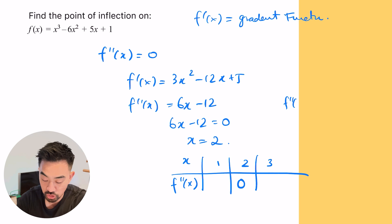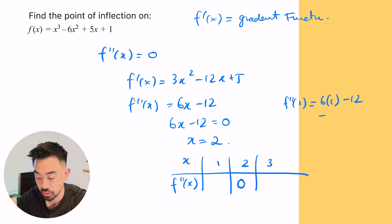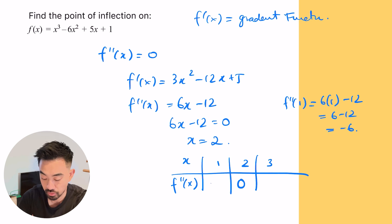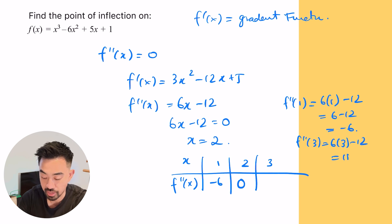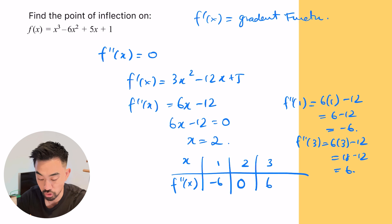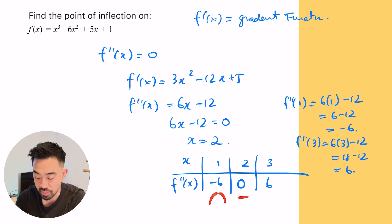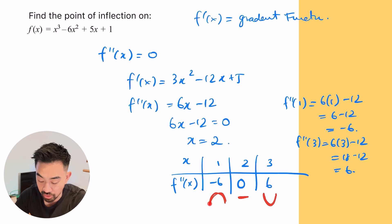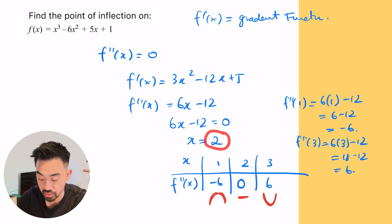f double dash of one is six times one minus 12, that's six minus 12, so that's negative six. f double dash of three is six times three minus 12, that's 18 minus 12, that's six. When the value is negative, that means it is concave down. When it's six — greater than zero — it is concave up. You can see that on either side of x equals two, our concavity changes. Therefore, this point is a point of inflection.